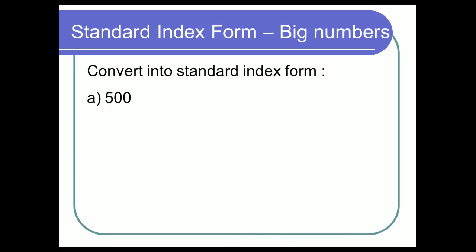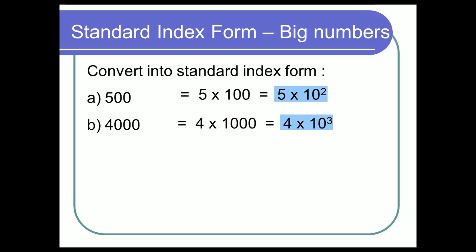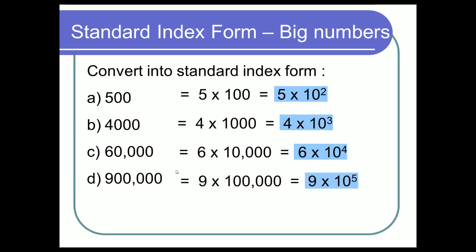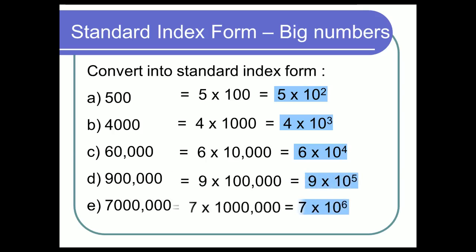So if we want to convert 500 into standard index form — that's five times 100, and 100 is 10 to the power of two or 10 squared. So it'll be 5 × 10². What about 4,000? That's four times a thousand, which is 4 × 10³. 60,000? It's six times 10,000, which is 6 × 10⁴. And you might be noticing it's just the number at the start multiplied by 10 to the power of how many zeros there are — and you'd be right in these cases.